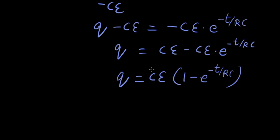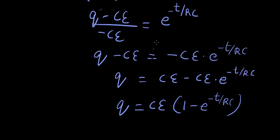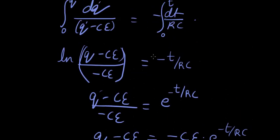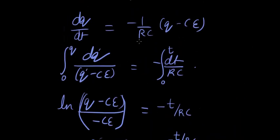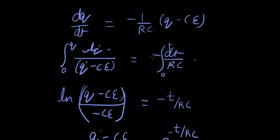You get q equals ce times 1 minus e power minus t over rc. Now as I told before, this is the reason we were taking rc, factoring rc out in the beginning of the equation before we did integration. Remember here we factored out rc to get a ce inside.